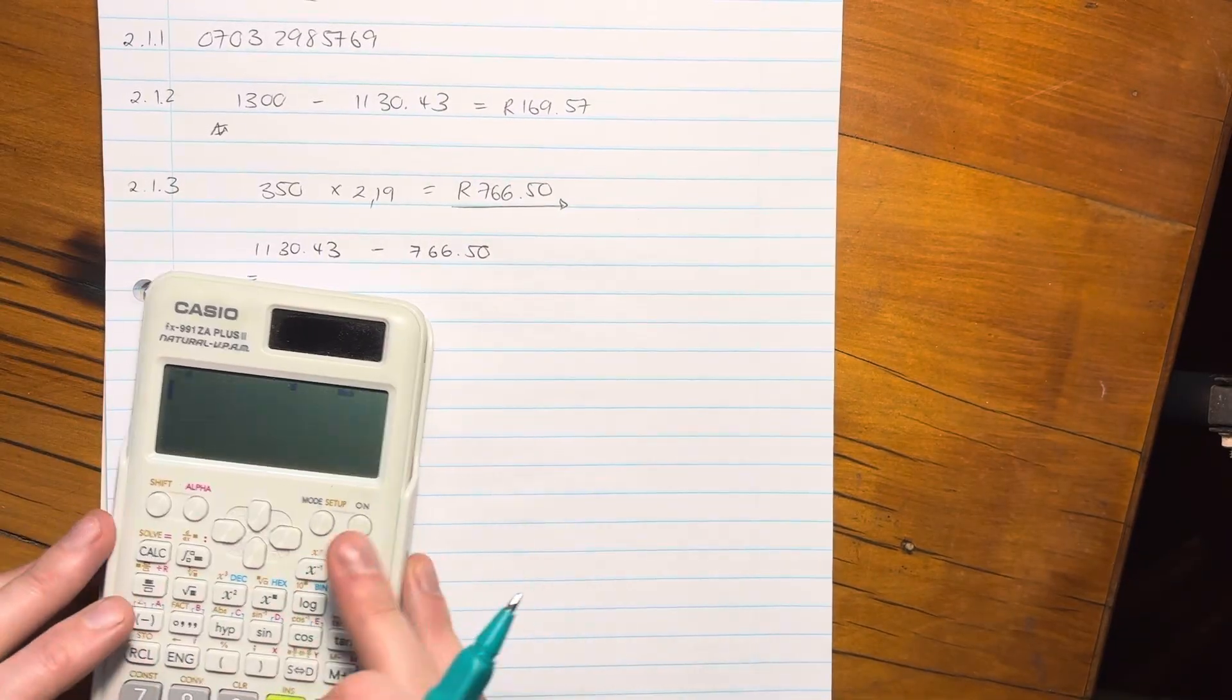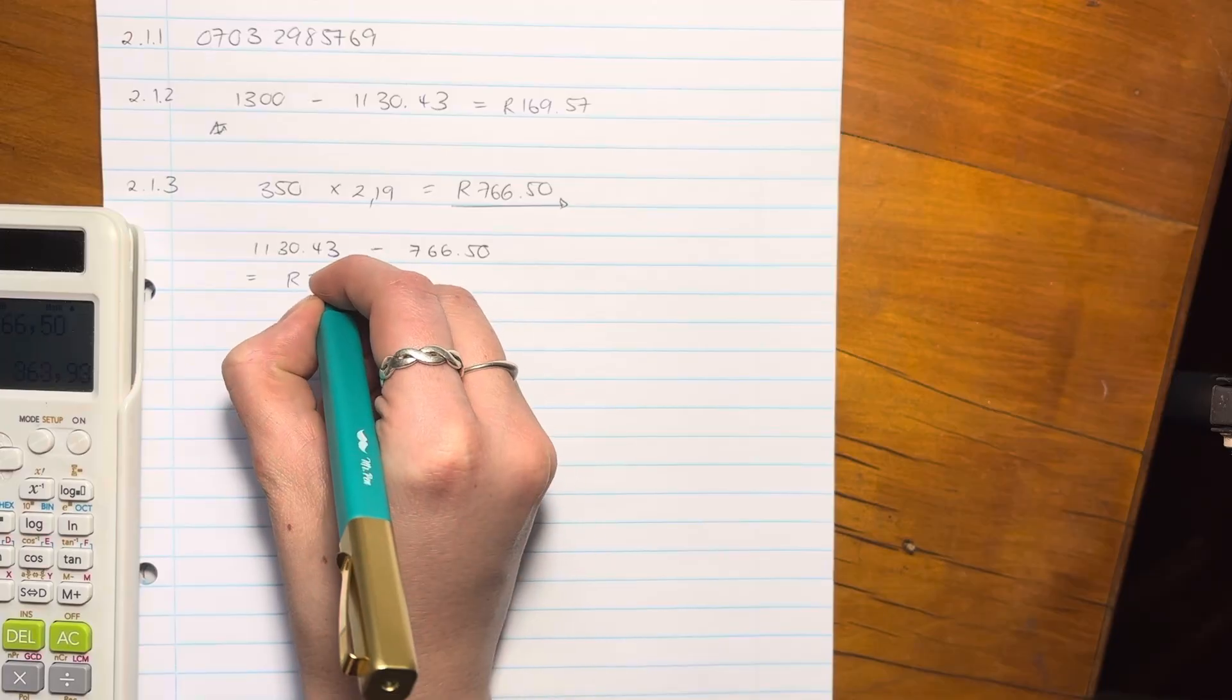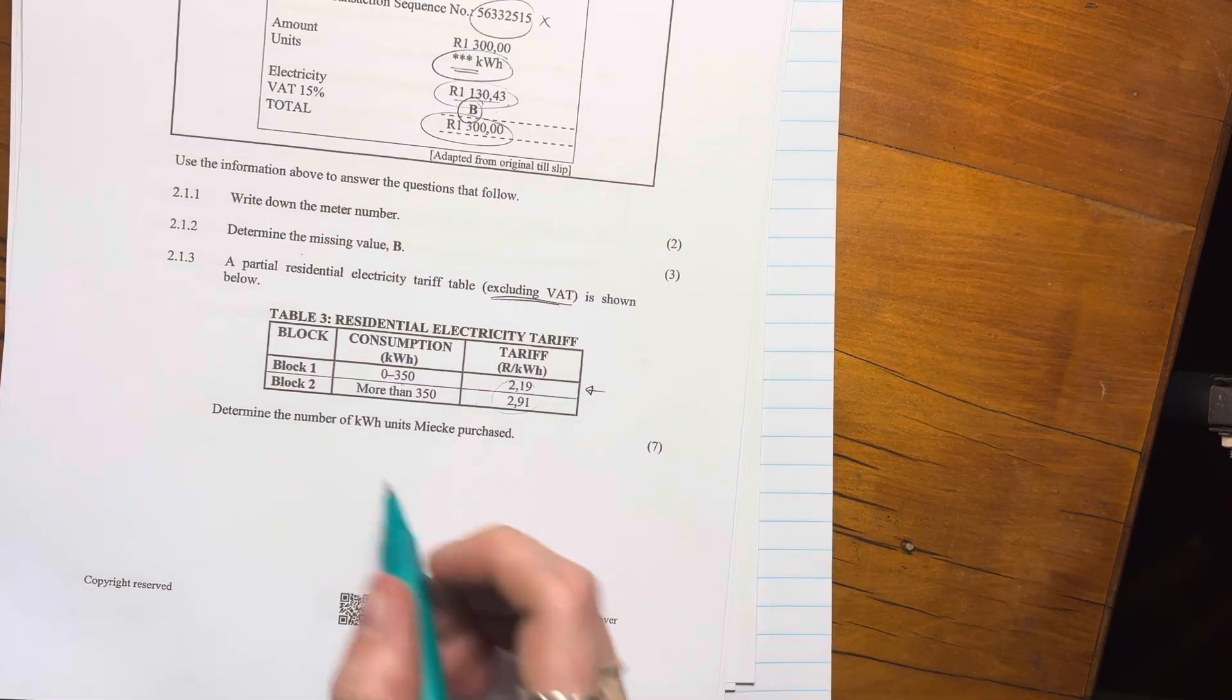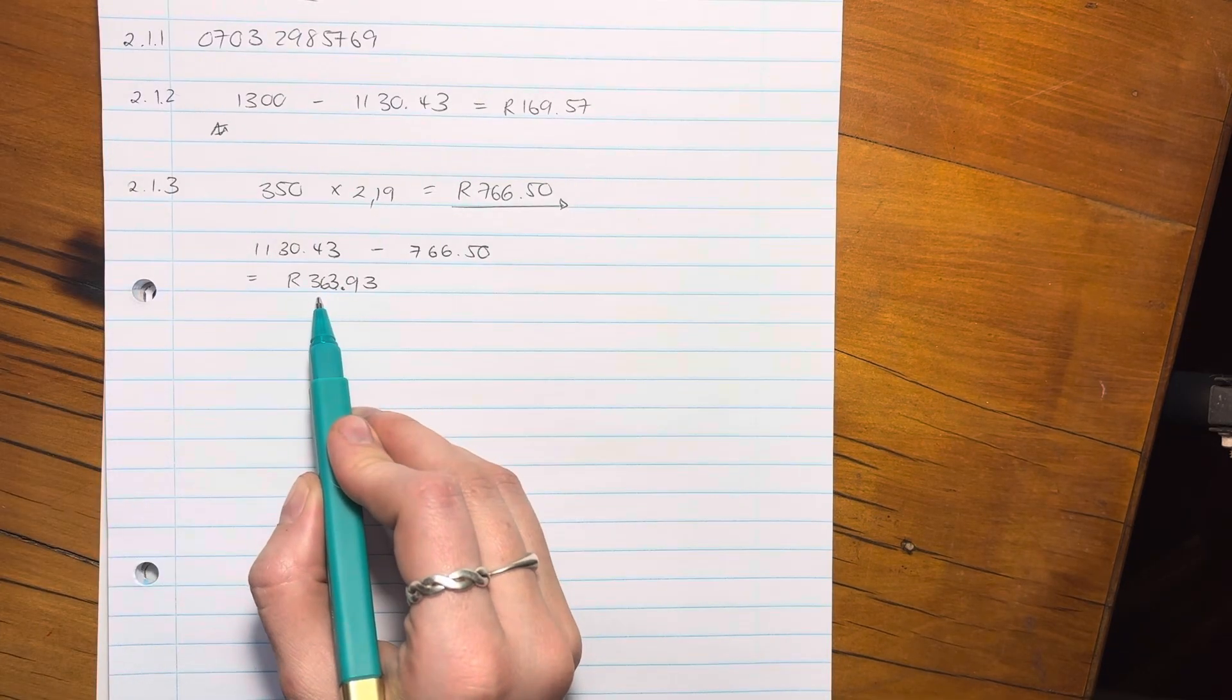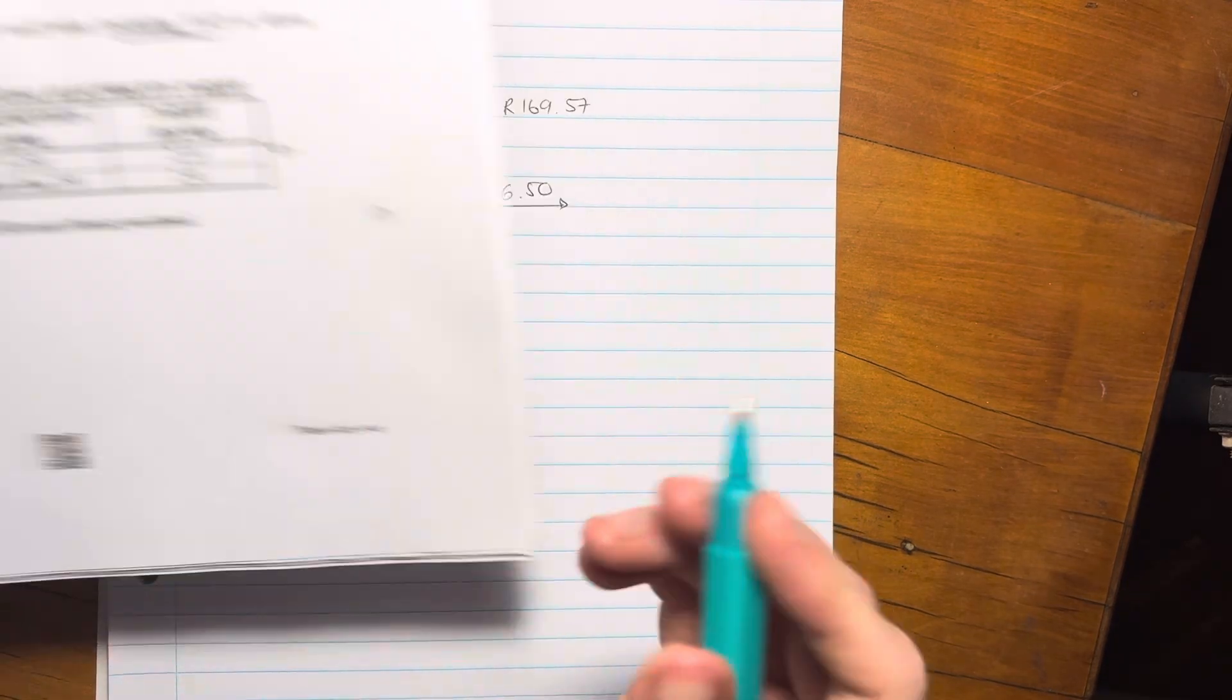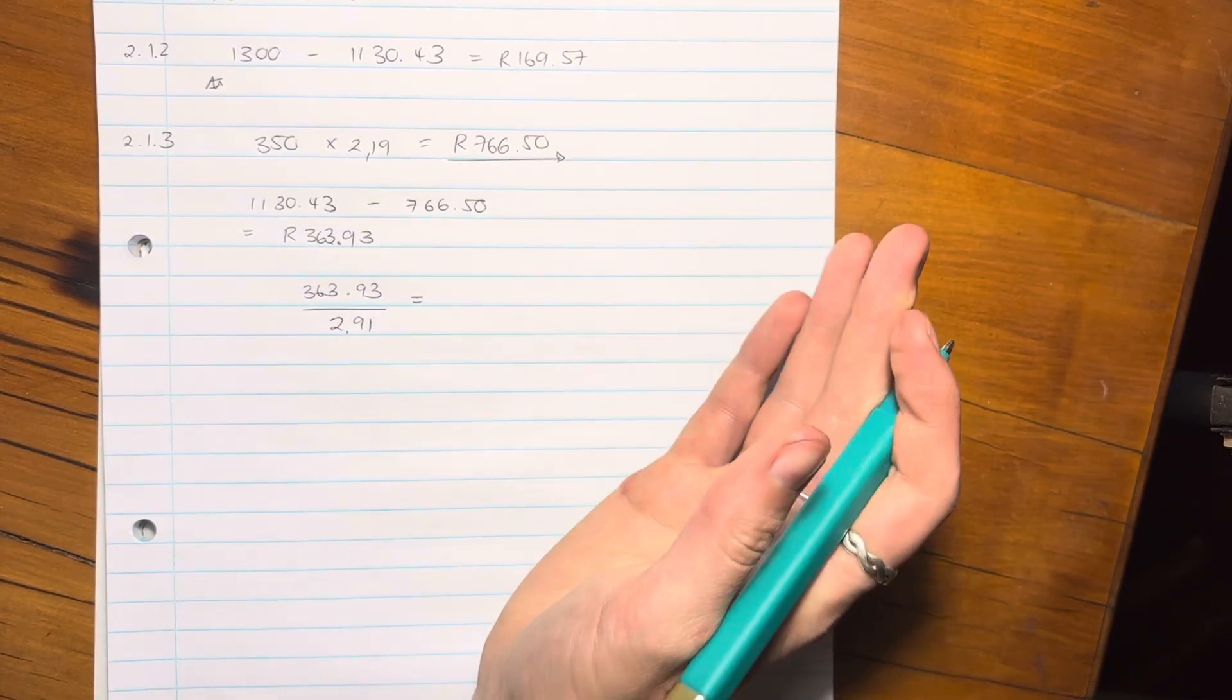So how much did she pay in block 2? Well, you just say 1,130.43, and you subtract off 766.50. And that gives us 363.93. Okay. So that's how much she paid in the second block. Now, remember, we're not trying to figure out how much she paid in the second block. We're trying to figure out how many kilowatts she used. So now we need to say, okay, in the second block, she used 363.93. But now each kilowatt costs 2.91.